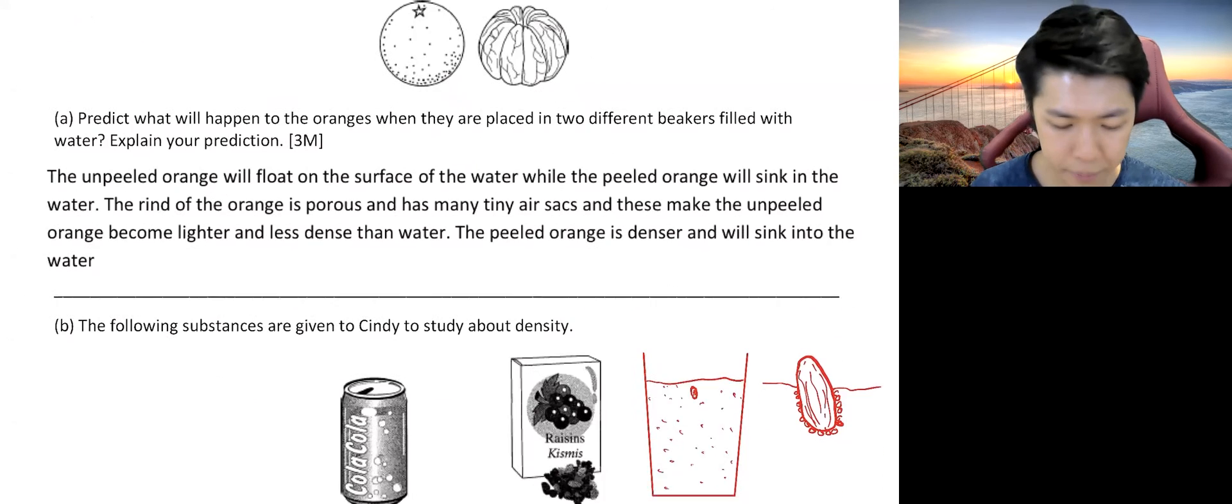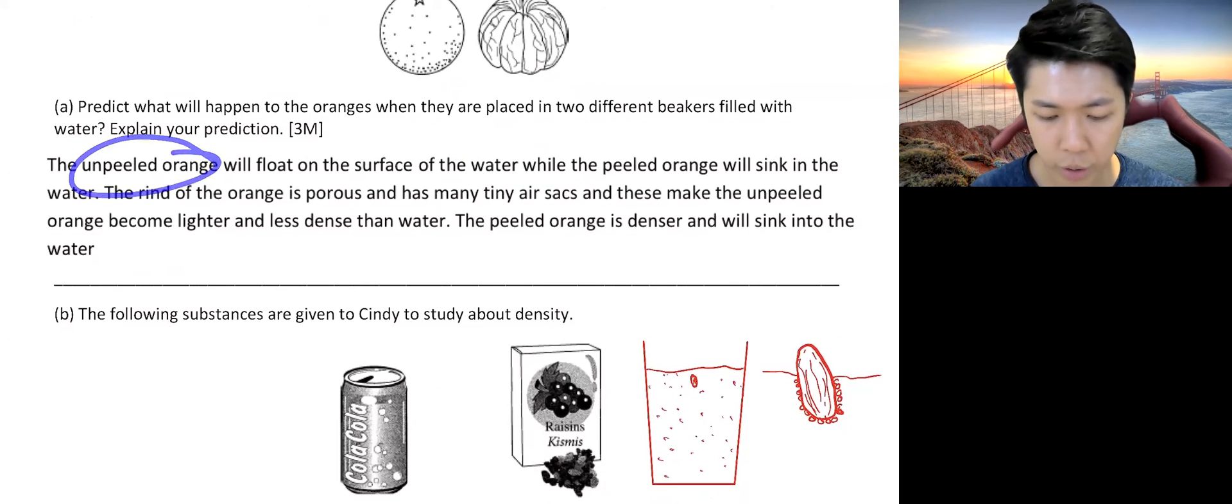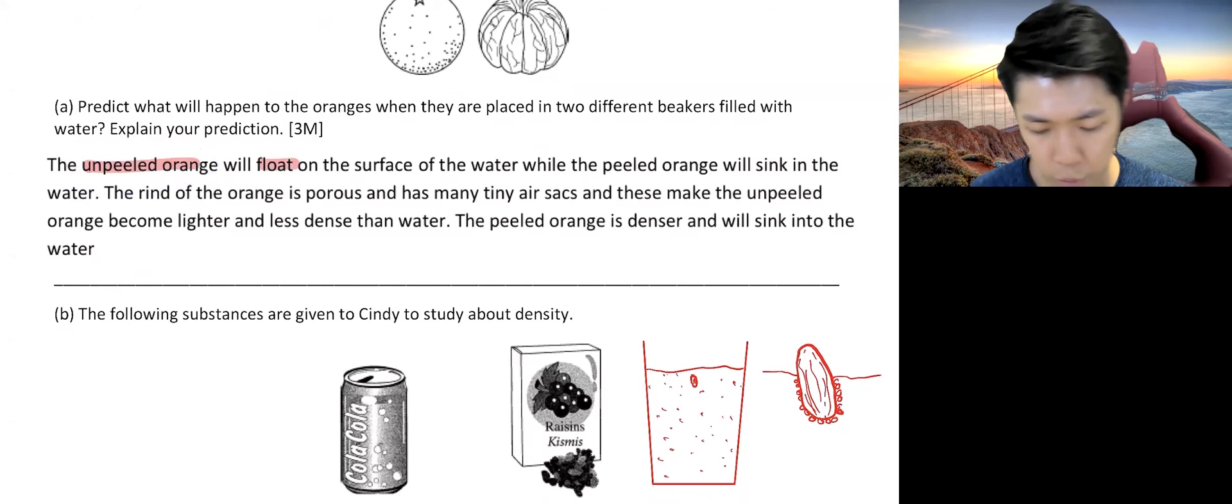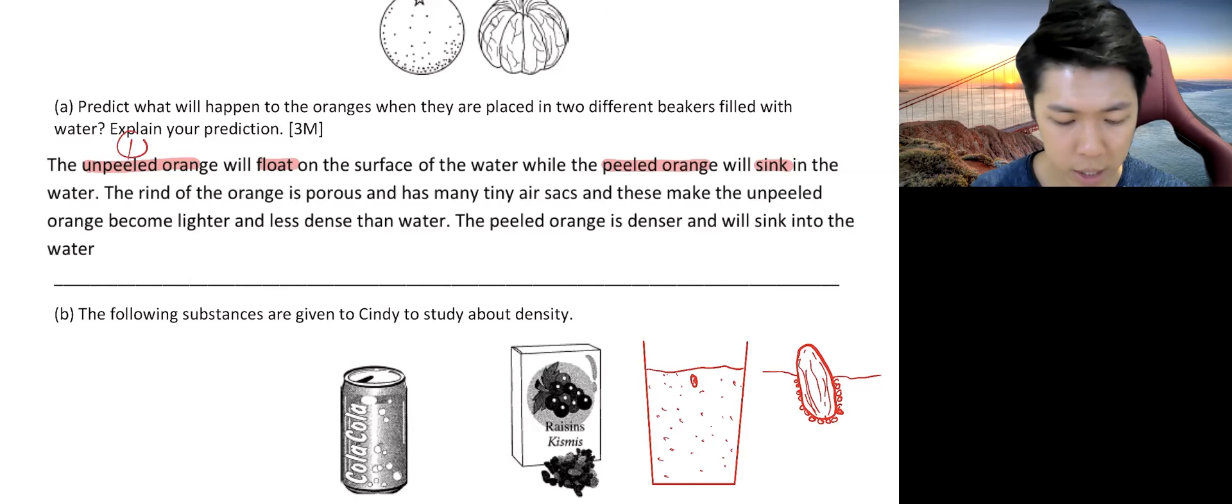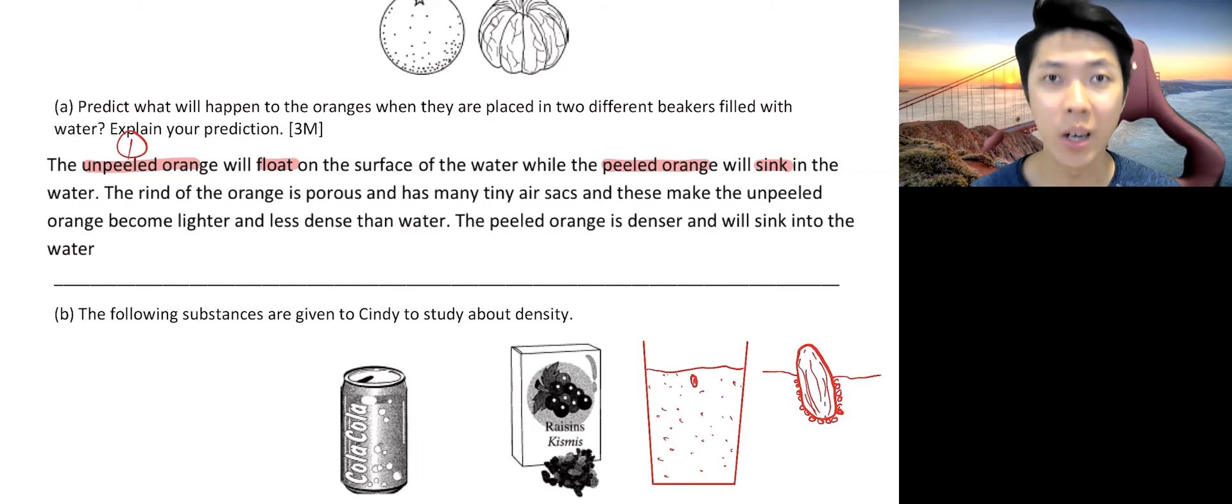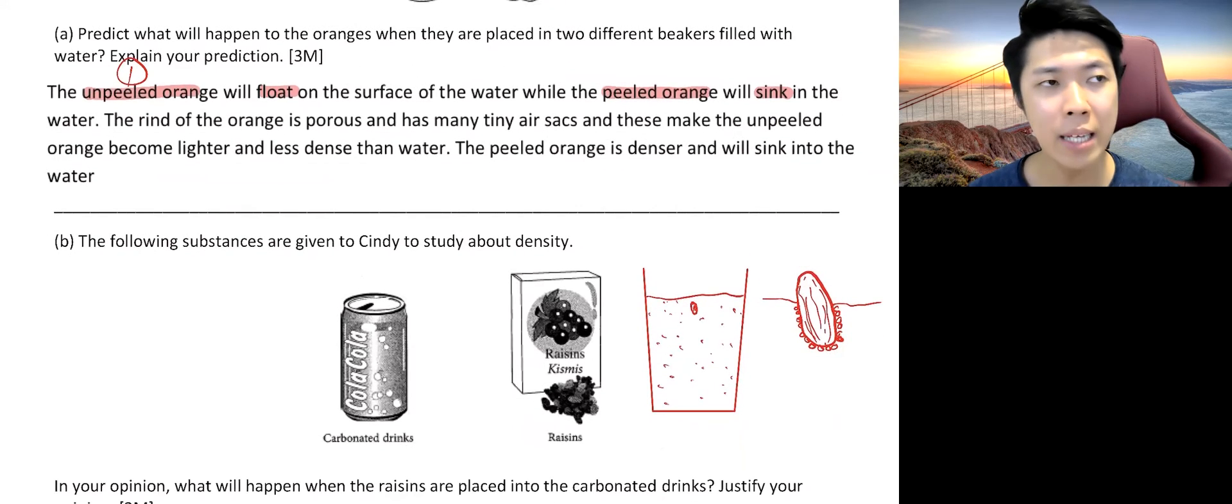So what will happen? The one with the skin, unpeeled orange, will float on the surface of the water. Whereas the peeled orange will sink. So far, this is one mark. So explain your prediction. Now, why does the unpeeled orange float?